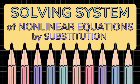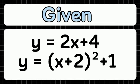I will answer the first number with the given of y equals 2x plus 4 and y equals parenthesis x plus 2 squared plus 1.